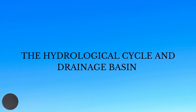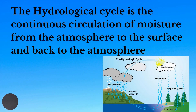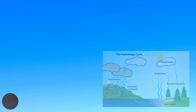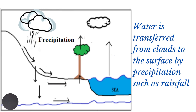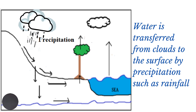Hello everyone, welcome back to my channel. Today we're going to be looking at the hydrological cycle and the drainage basin. The hydrological cycle, also called the water cycle, refers to the continuous circulation of moisture from the atmosphere to the surface and back to the atmosphere. Water is transferred from clouds to the surface by precipitation, such as rainfall,